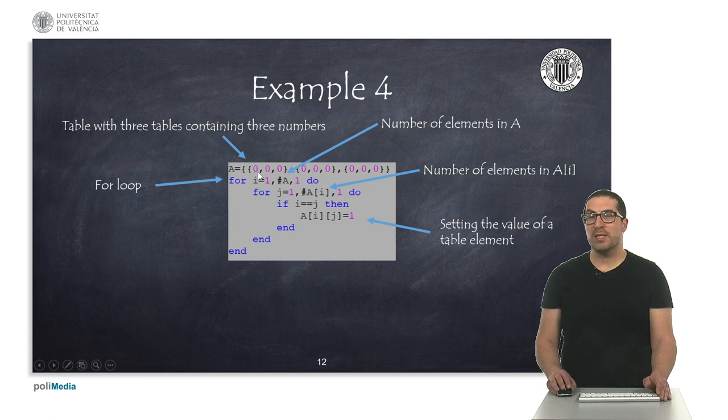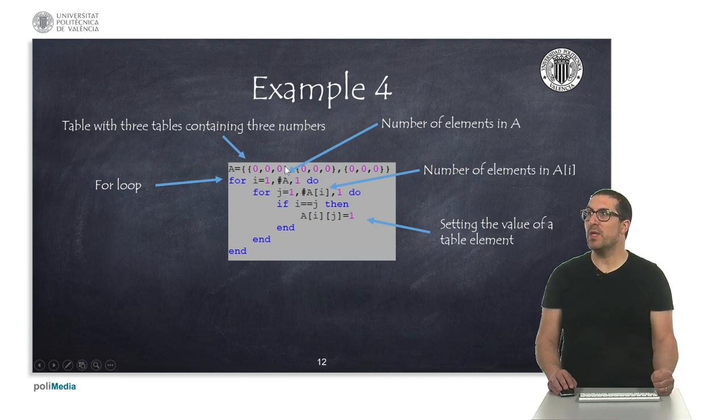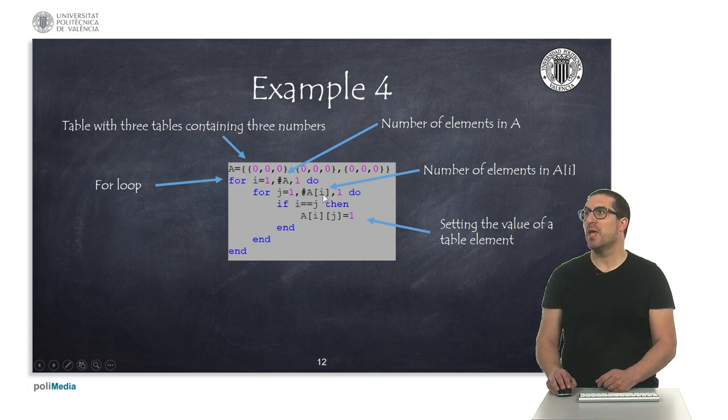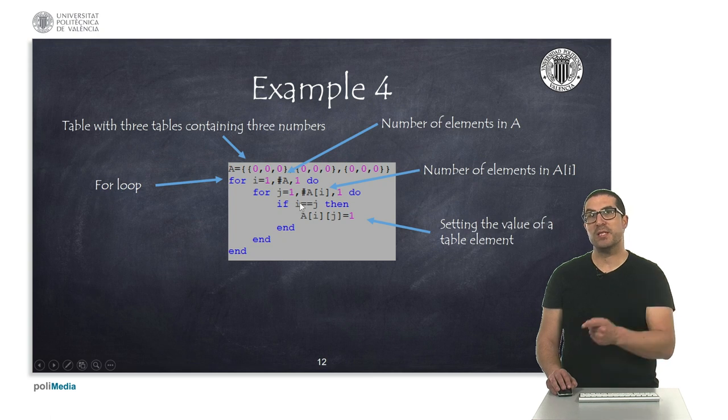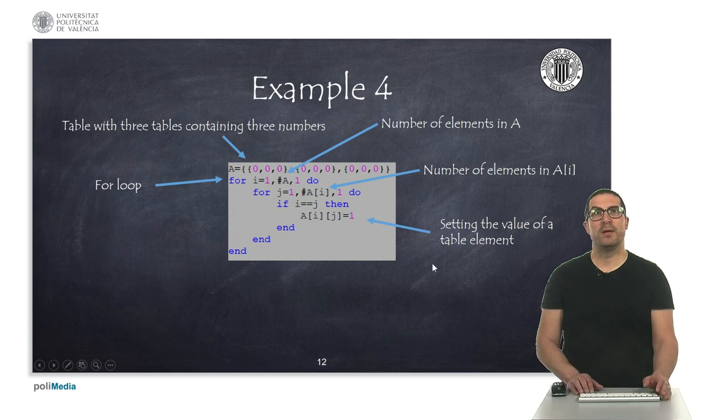Then, I'm doing a for loop, in which I'm iterating from one to the number of elements of a, this will return three because it has three elements, a has three elements, which are three tables, and then the step is one. And then, I'm doing a second loop to iterate from one to the number of elements of each of the tables inside a, and this will return in this case three as well, and then with a step one. And then, if the element is in the diagonal, then I'm assigning a one.